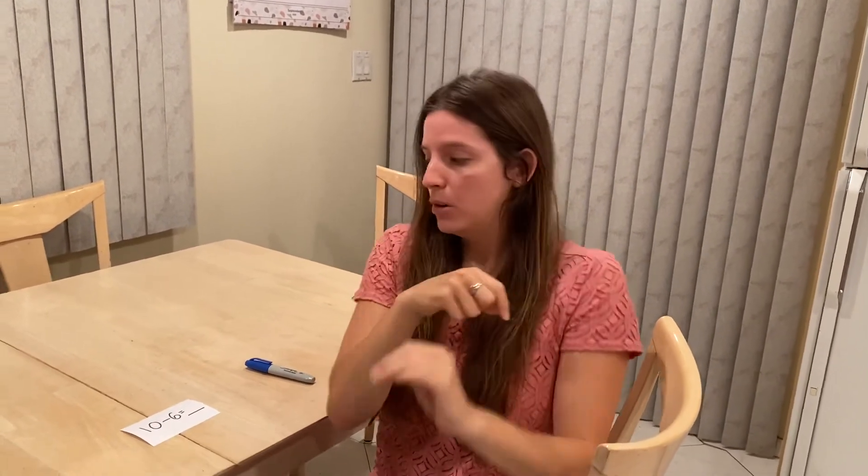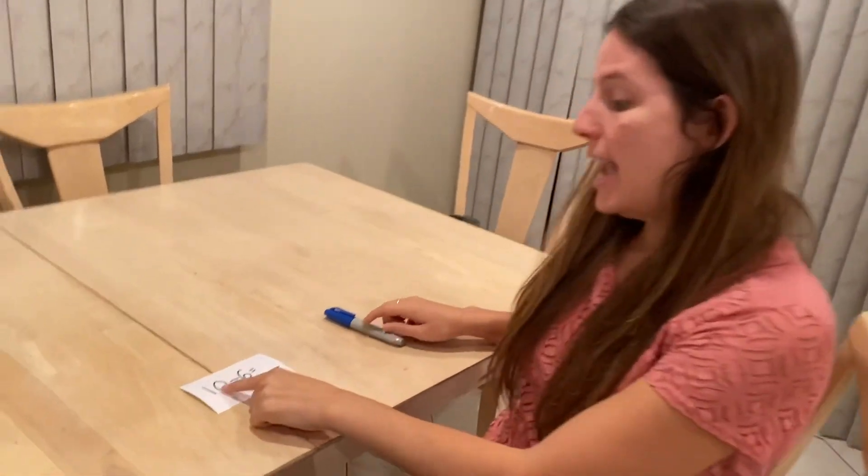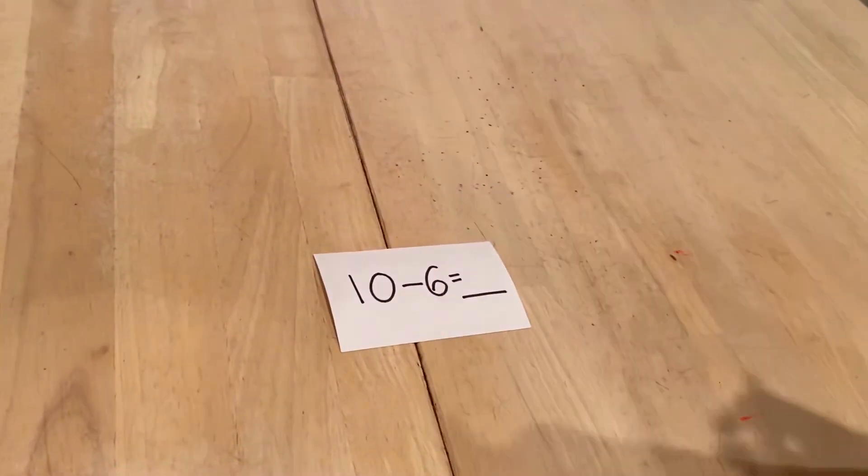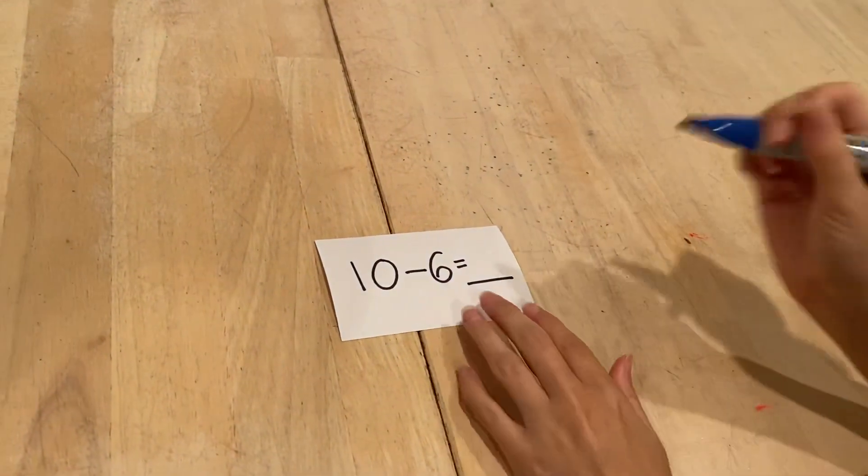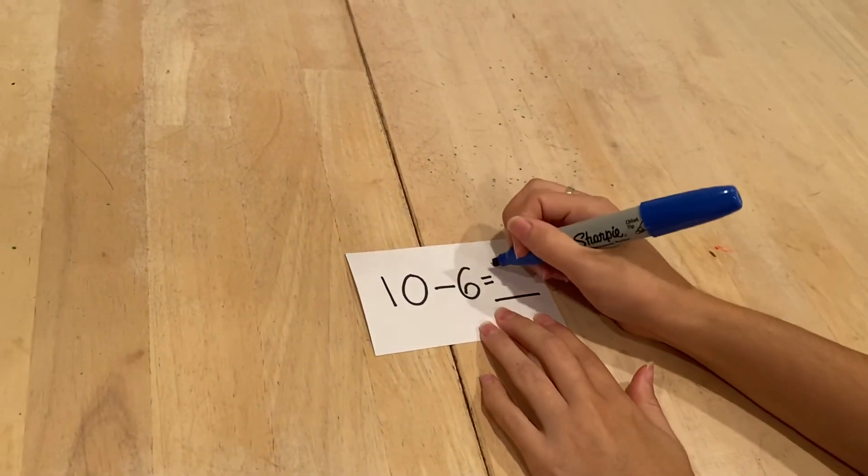1, 2, 3, 4, 5, 6. I'm going to put down those fingers and count how many are left: 1, 2, 3, 4. So 10 minus 6 equals 4.